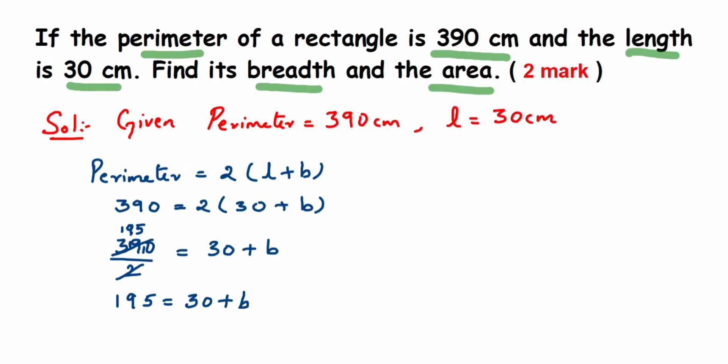Now 30 is in addition with B. When you transpose this to the other side, it comes in subtraction, so we'll get 195 minus 30. We'll get 165, so 165 is equal to breadth.